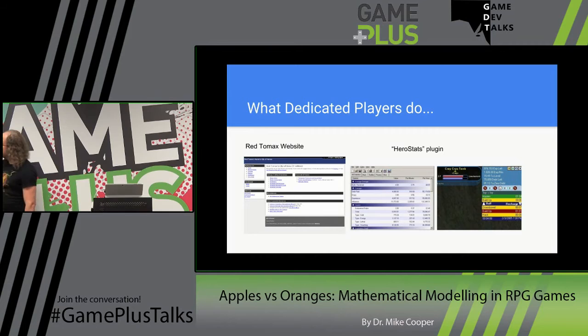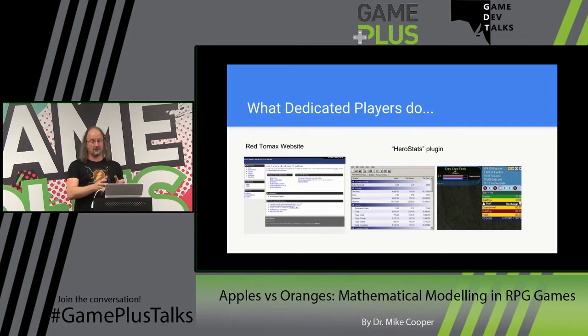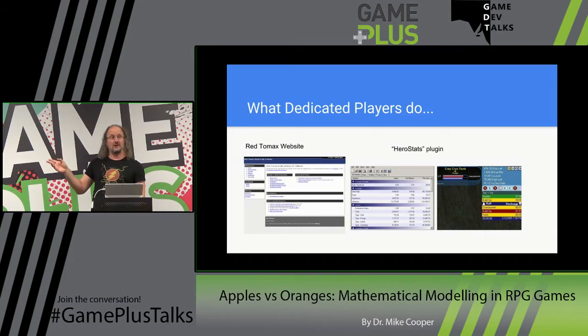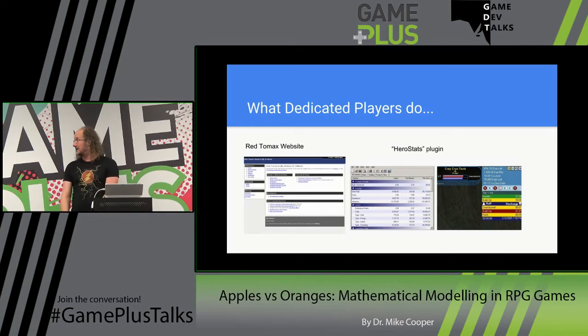When I got onto the City of Heroes forums, I found the Red Tomax website. This was a player who had got a contact in the development studio, who'd slipped him some game data, and he'd published his spreadsheets online. You weren't fit to take part in conversations until you'd crunched those numbers. Someone else wrote the Heroes Stats plugin — a little app that recorded your DPS and output stats while you played. People would talk on the forums about exact DPS values after different builds. This is for a small backyard MMO — I dread to think what World of Warcraft's got.